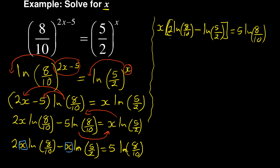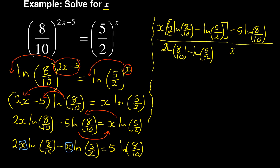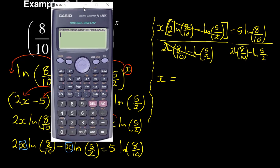I'm solving for x, so I divide both sides by [2·ln(8/10) minus ln(5/2)]. What I do on the left I must do on the right, and those terms cancel, leaving x on its own.